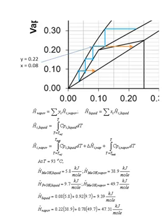In order to properly size the feed preheater, we need to do energy balances around the feed stage. At our feed stage, the composition is a mole fraction in the vapor phase of 0.22 and in the liquid phase of 0.08. The vapor enthalpy leaving the feed stage is given by the summation of individual mole fractions times the specific enthalpy of the vapor, and likewise for the liquid. For the liquid phase, we use the integral of heat capacity from a reference temperature to the stage temperature.